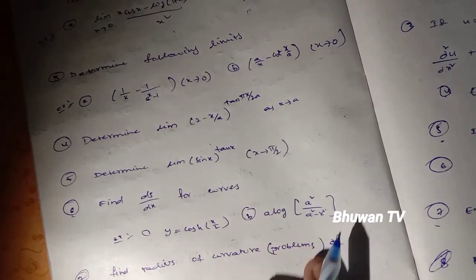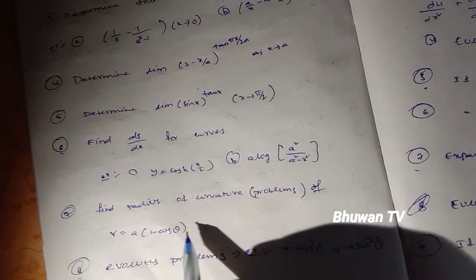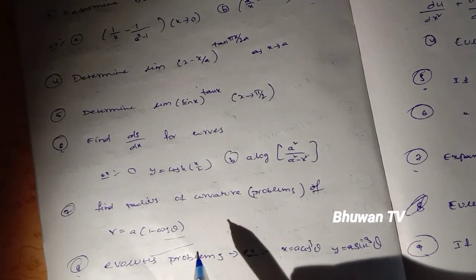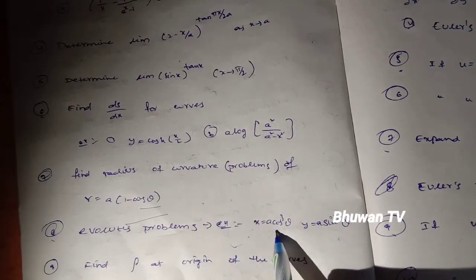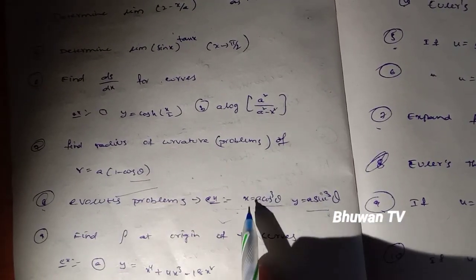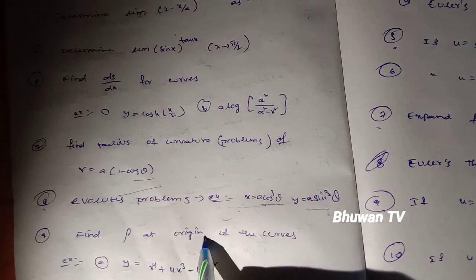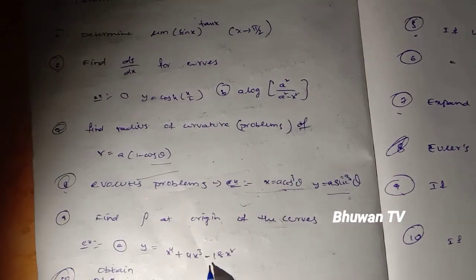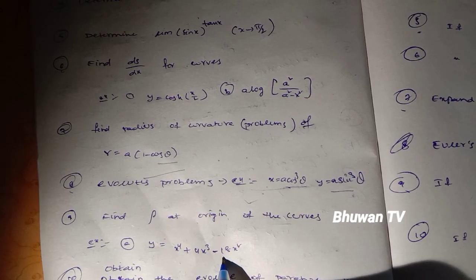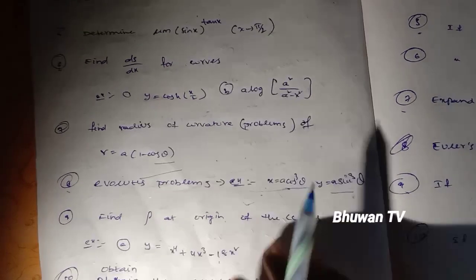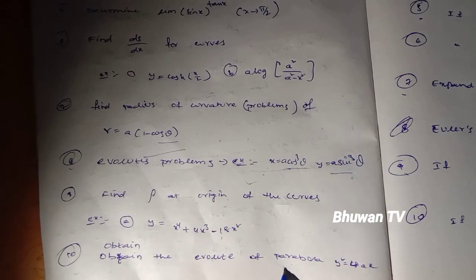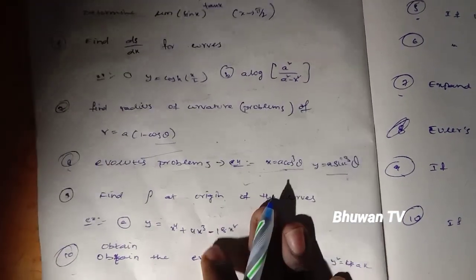Find ds/dx for curves — problems and examples. Find the radius of curvature; example: x equals a(1 minus cos θ). Evaluate: x equals a cos³t, y equals a sin³t. Find ρ at the origin for y equals x² plus x⁴ plus 4x³ minus 18x². Obtain the evolutes of the parabola y² equals 4x.